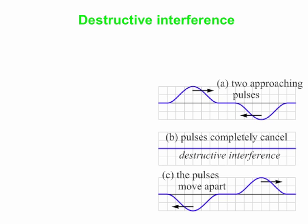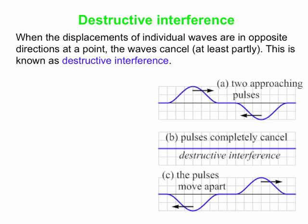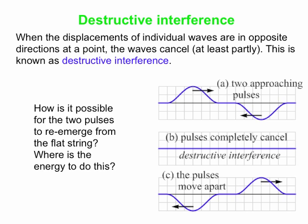In a very similar way, we have something called destructive interference. This is where the individual waves want the medium to go in opposite directions, so you get cancellation — which may be complete cancellation, but can also be just partial cancellation. In the picture, we have equal and opposite mirror-image pulses approaching each other. For one instant, the pulses actually completely cancel — there's completely destructive interference. And then, almost by magic, out from that flat string reemerge the pulses, and they move away as if they'd never met.